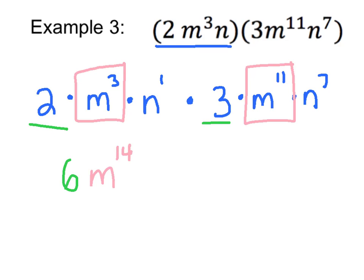I also see that I have n terms. So I have n to the 1st times n to the 7th. My base number n stays the same and I add my exponents. 1 plus 7 is 8.